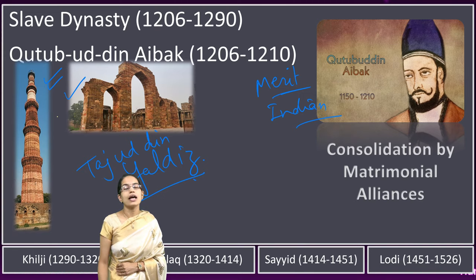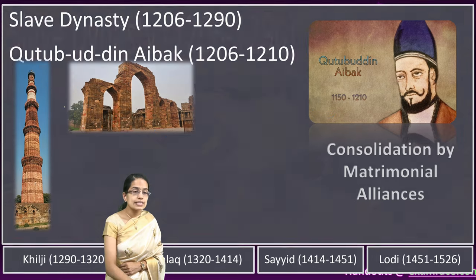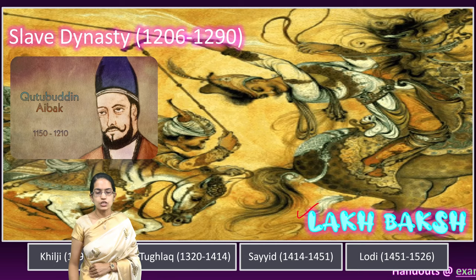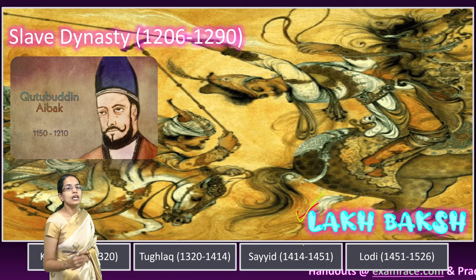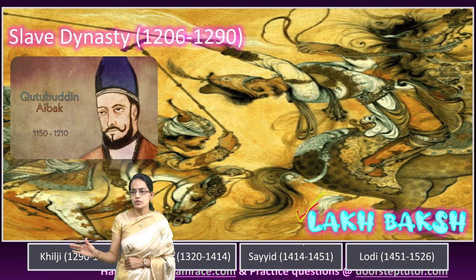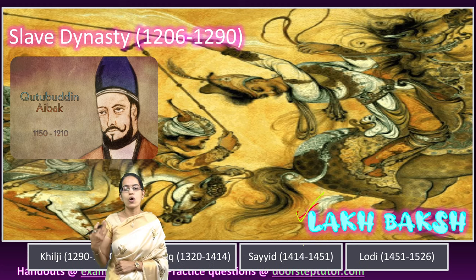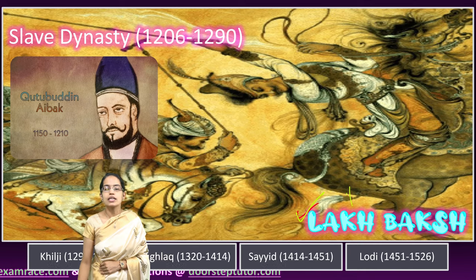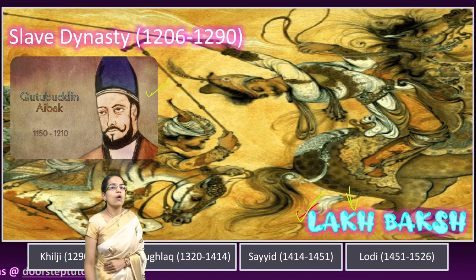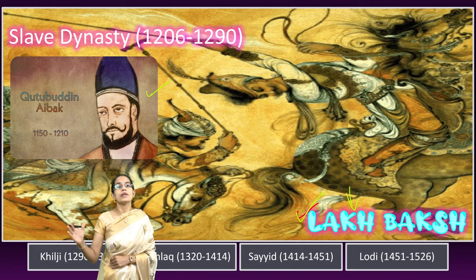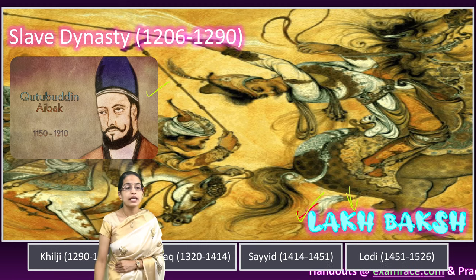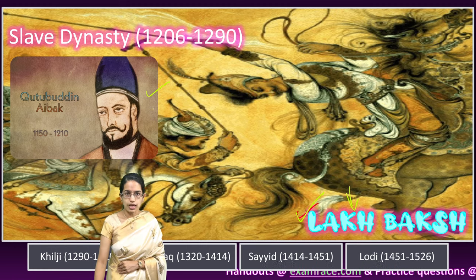He was also known as Lakhbakhsh, meaning the 'giver of lakhs,' because it is believed that he donated generously to both Hindus and Muslims. Interestingly, his last moments were while he was playing polo, and he had an untimely death while playing Indian polo, which is also known as Chawgan.